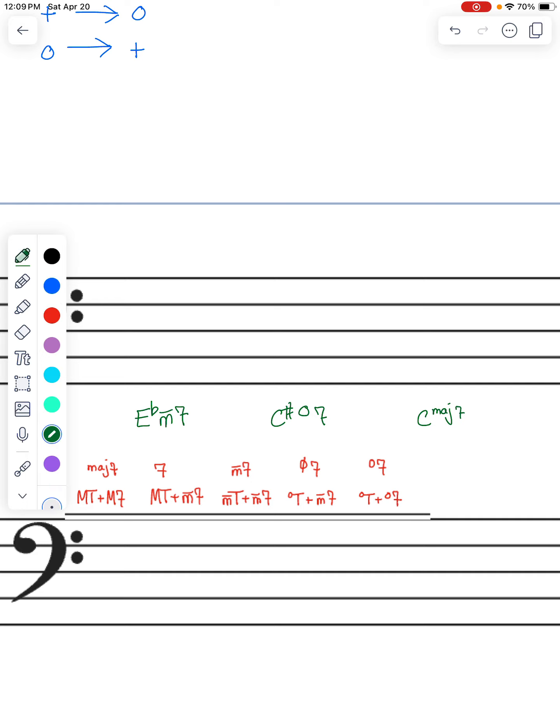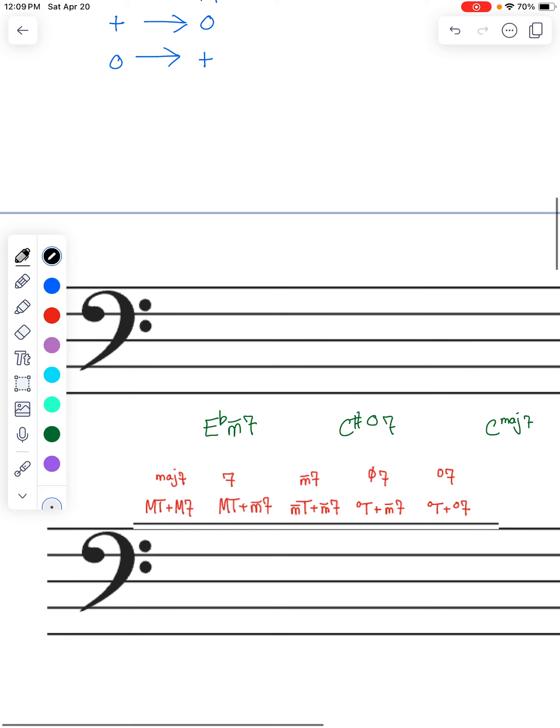So let's create some of those. What we would do here is we would take our root position triad. We would make an E-flat minor triad. So we're in bass clef. Let's make an E-flat minor. We've got E-flat, B-flat, E-flat, A-flat, D-flat. So E-flat, G, B-flat.